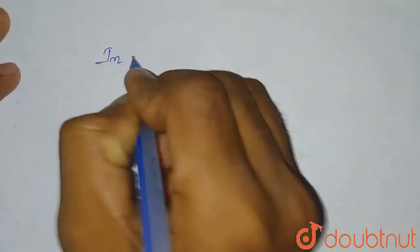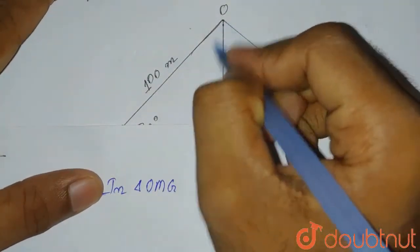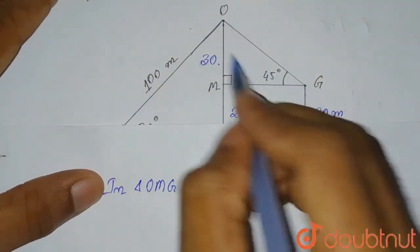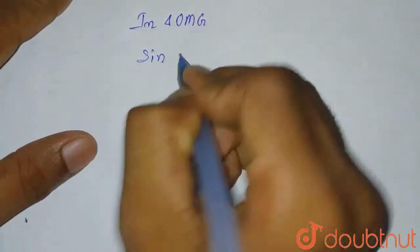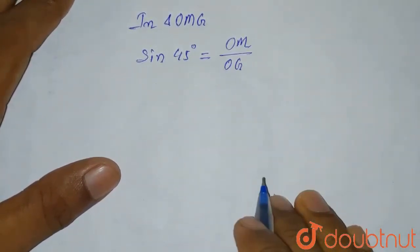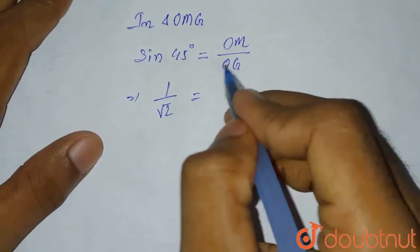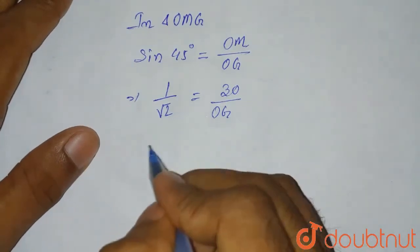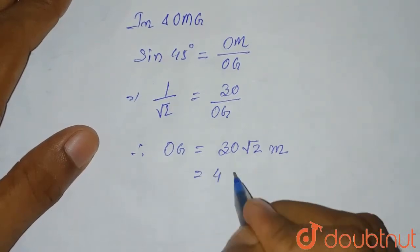Now in triangle OMG, we'll use the formula of sin theta again. Sin 45° equals OM divided by OG. In triangle OMG, sin 45° equals OM by OG. We put the value of OM as 30, and since sin 45° equals 1 by root 2, we get 1/√2 equals 30 divided by OG. Therefore OG equals 30√2 meters, which equals 42.3 meters.